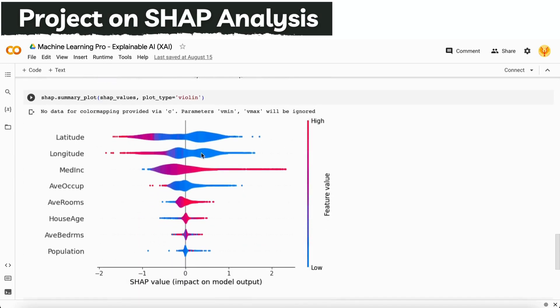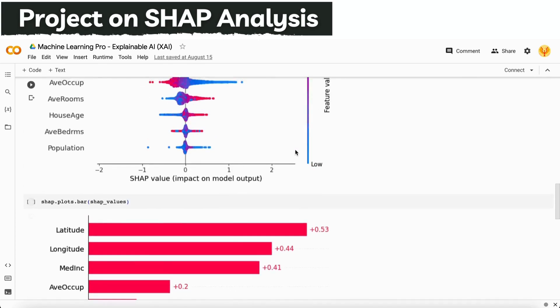You can also plot a summary plot in a violin plot type. It will also show the same thing. When median income values are high, shown in red color, it will also influence the price of the house in a very positive way.